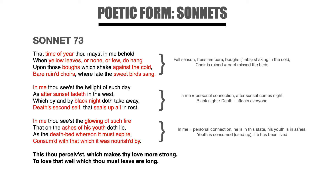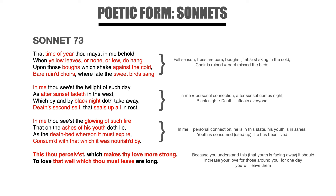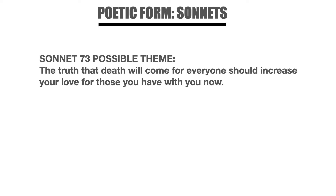After setting the picture that he is in the fall season of life, where most of his life has been lived, the poet finishes with these two lines: This thou perceivest which makes thy love more strong, to love that well which thou must leave ere long. This final couplet — these last two lines — is the narrator giving us the advice he wants us to know, telling the reader his overall theme: that we see age around us and we ourselves are getting older, so this should increase our love and make it more strong, because we don't know how much time we have left. The possible theme that William Shakespeare wanted us to learn is that the truth that death will come for everyone should increase your love for those you have with you now.